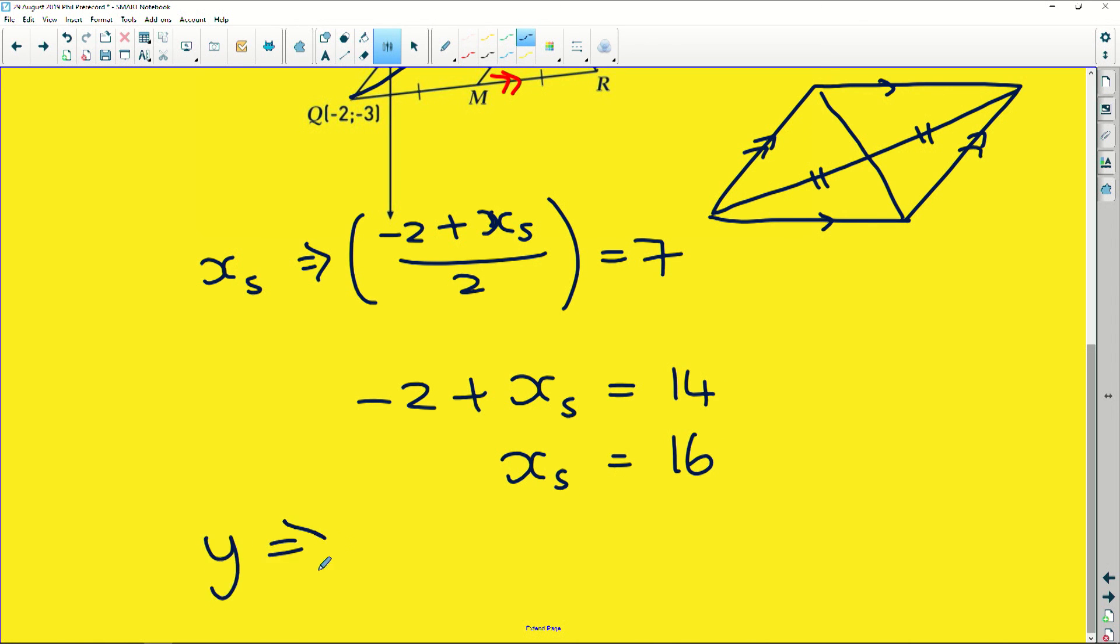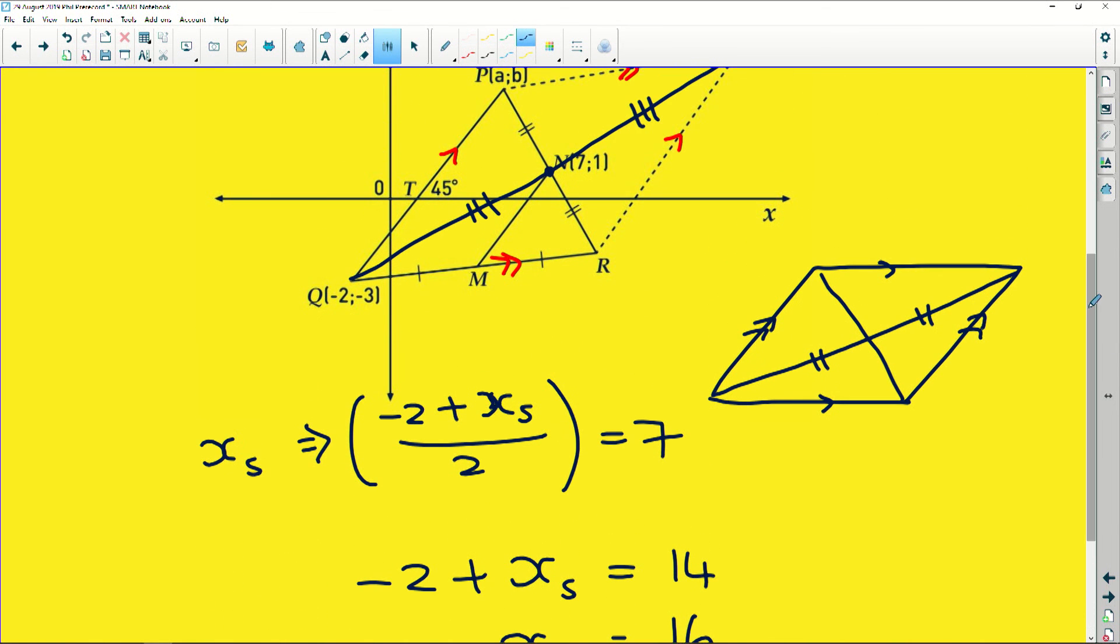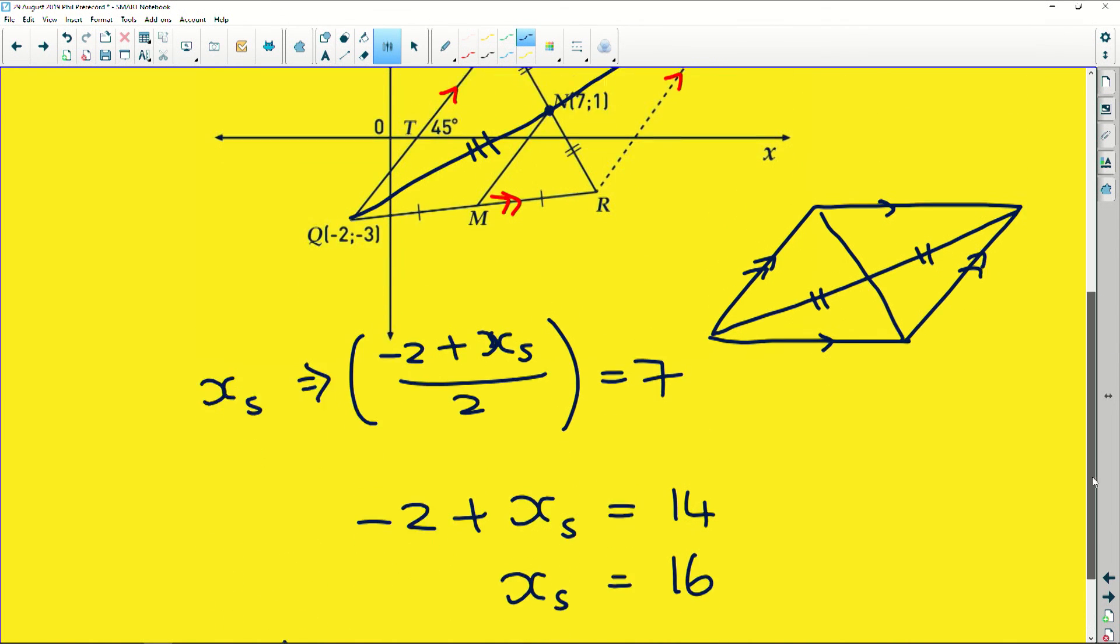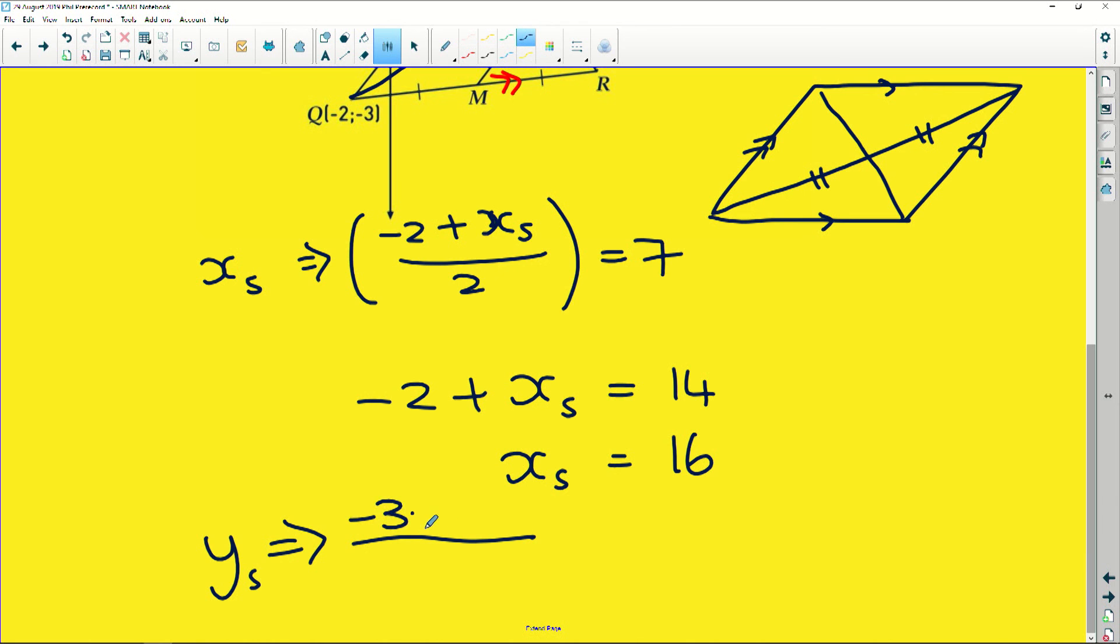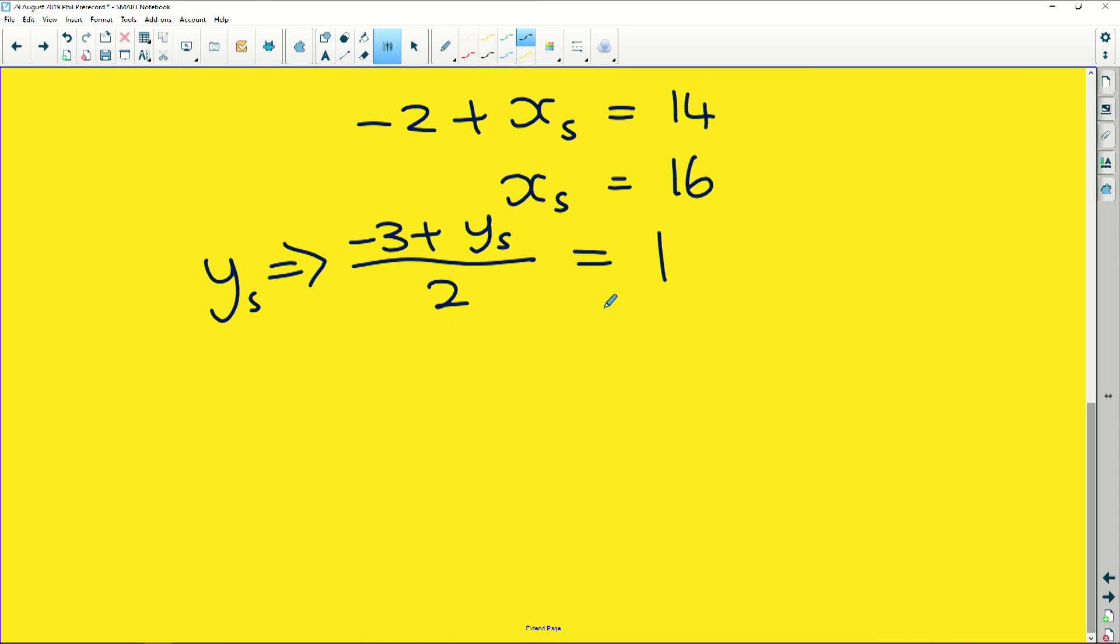Same thing for the Y value. We say that it is equal to negative three plus the Y value at S divided by two, and that is going to give us the Y value at N, which is one. So multiplied by two, we get negative three plus Y is equal to two, which means that Y is equal to five. So S sits at 16 and 5.